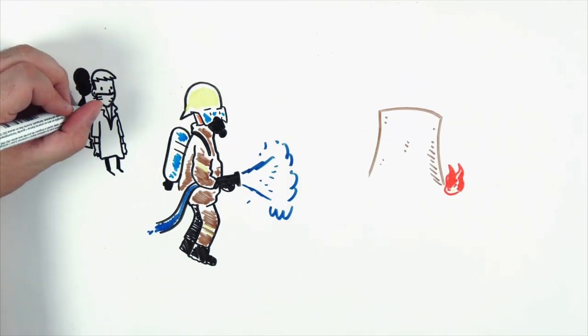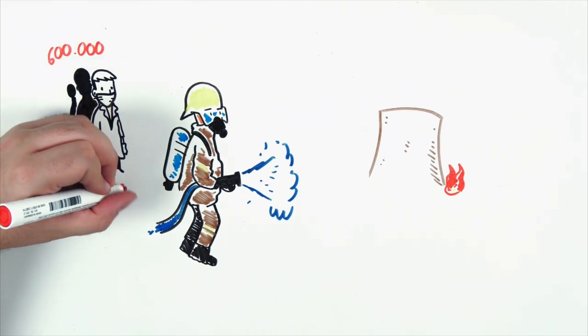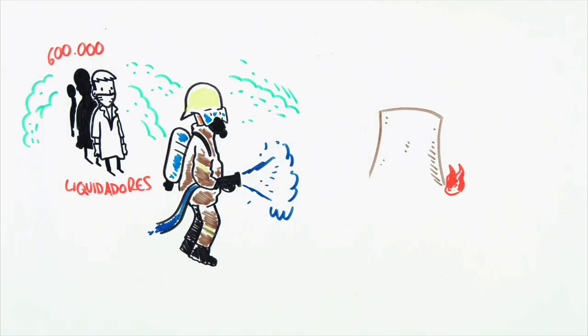600,000 people helped cleaning the area and they were called liquidators. They could stay in the area for no longer than two or three minutes to avoid the radiation. Over 60,000 of them died and over 165,000 got sick.